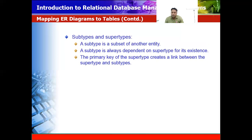The primary key of the supertype creates a link between the supertype and subtype. The subtype is called the subset of another entity, or it is a part of another entity, and it is always dependent upon the supertype for its existence.